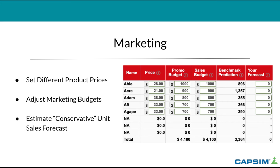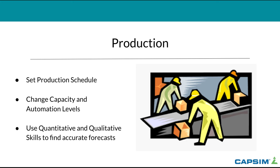Next, let's dig into marketing. Those same five segments each have a product — Abel, Acre, Adam, Aft, and Agape, though names vary by team. You'll see price, promo budget, sales, and forecasting columns. You set prices depending on competition and consumer preferences — for example, Acre (a low-end product) needs a very low price, while Adam (a high-end product) prioritizes performance over price. You'll also adjust marketing budgets and estimate a conservative unit sales forecast to cover your worst-case scenario.